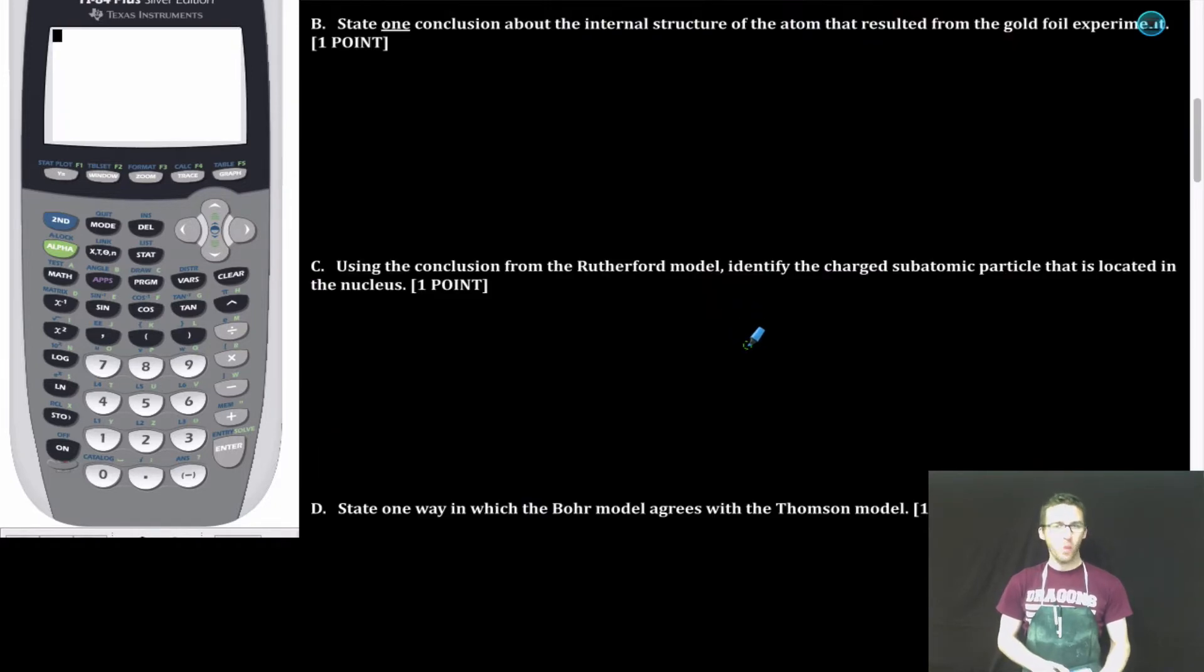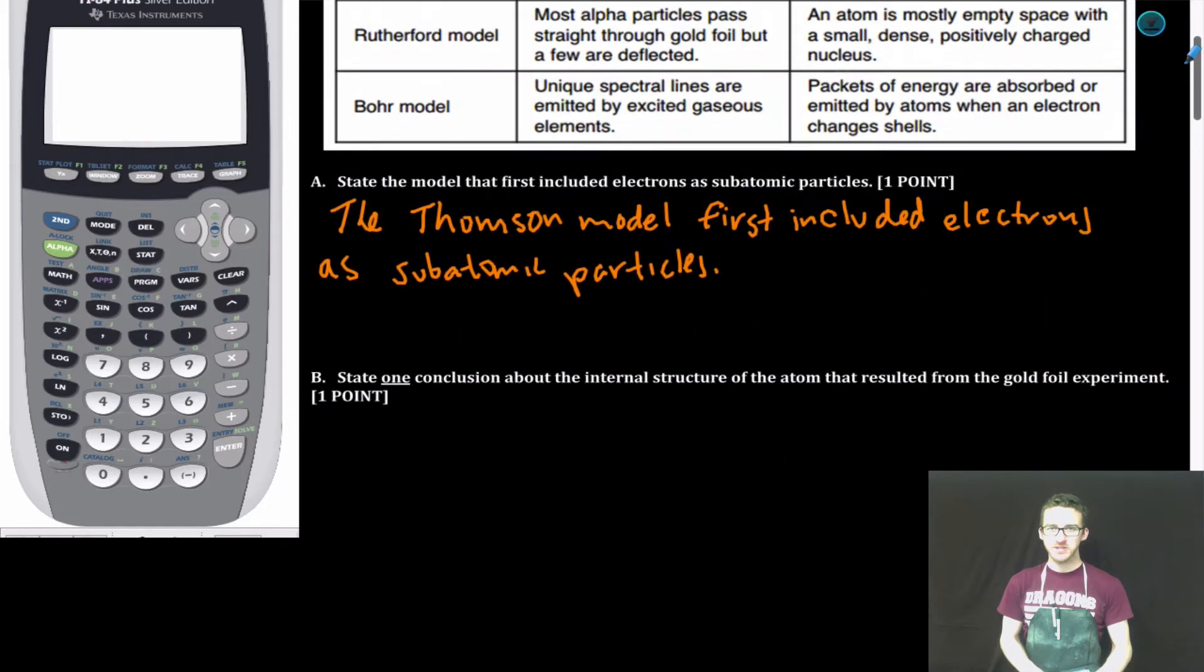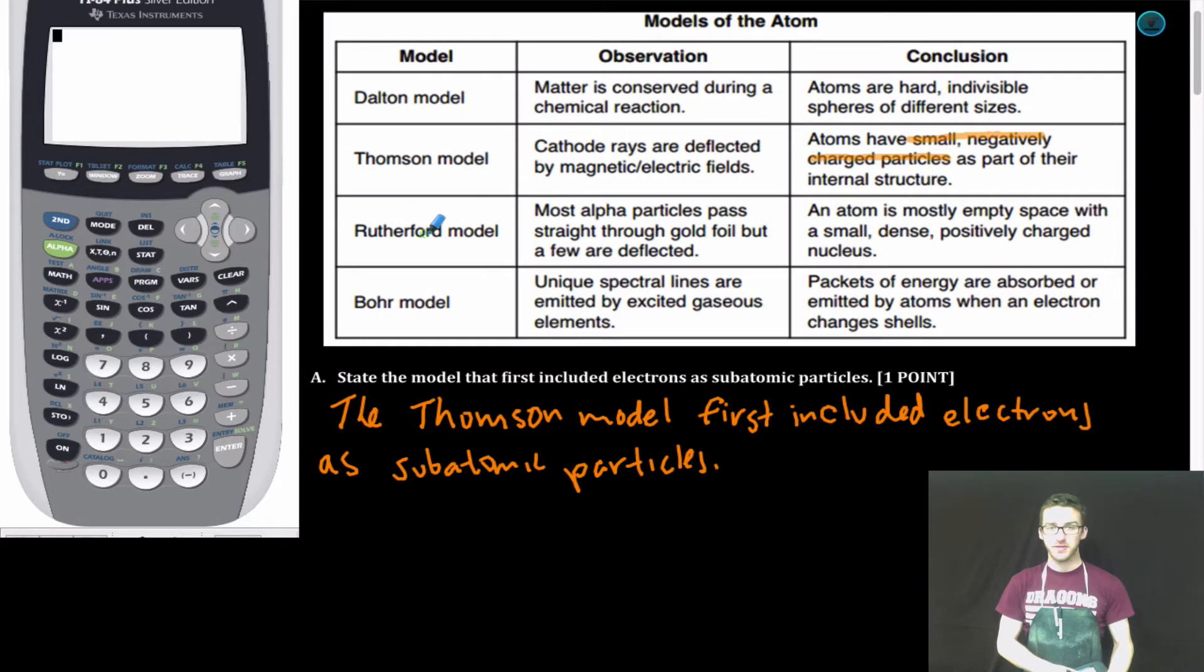Part B. State one conclusion about the internal structure of the atom that resulted from the gold foil experiment. As I come back up to my data table, let's take a look at the Rutherford model. Recall that Rutherford's model of the atom came as a result of the gold foil experiment. Notice that the gold foil experiment helped us understand that an atom is mostly empty space, and there's a small, dense, positively charged region known as the nucleus.